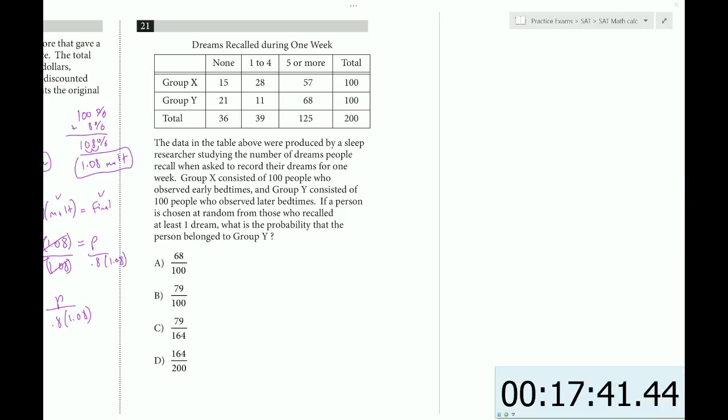If a person is chosen at random from those who recalled at least one dream - this is important. This tells us we're not using the entire sample. We're going to do probability. Probability is always success over total, but the total is not always the grand total. In this case, we're taking our sample from those who recalled at least one dream.